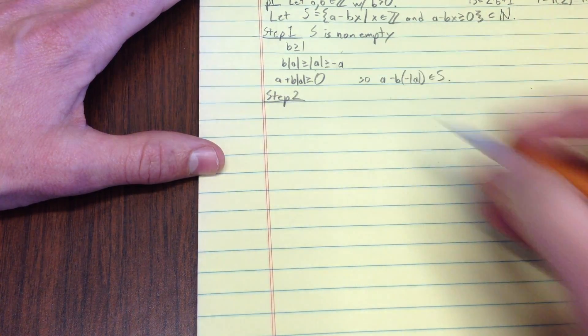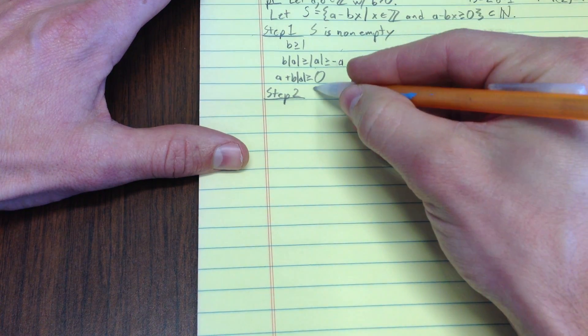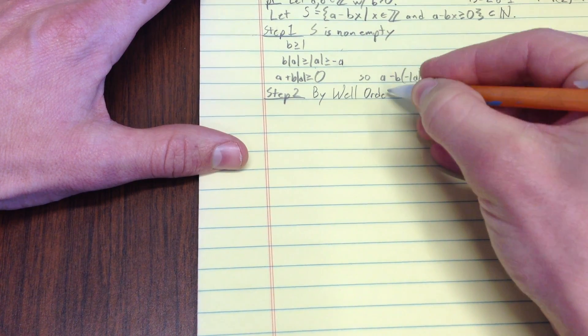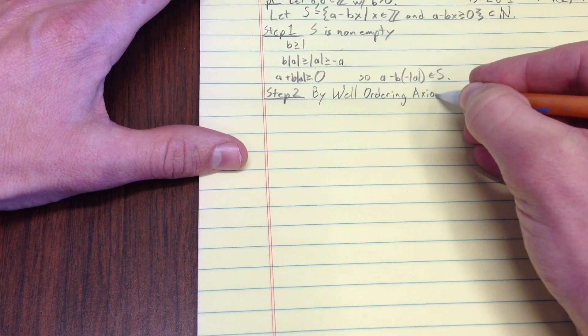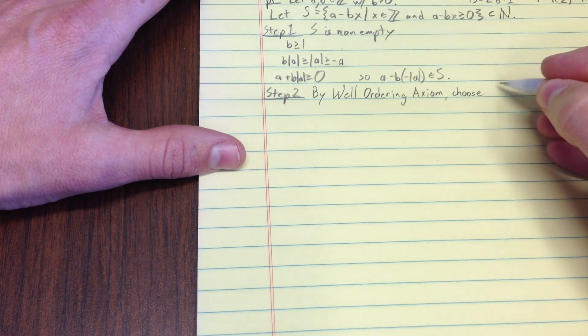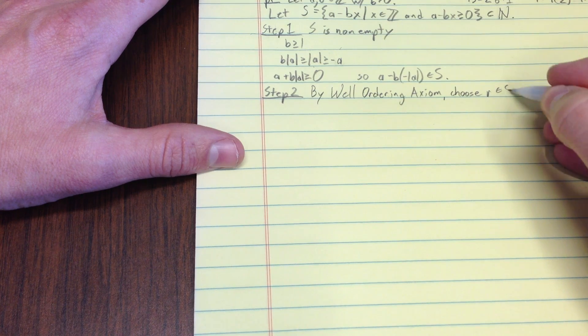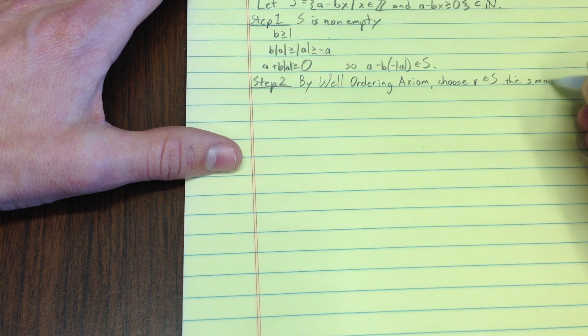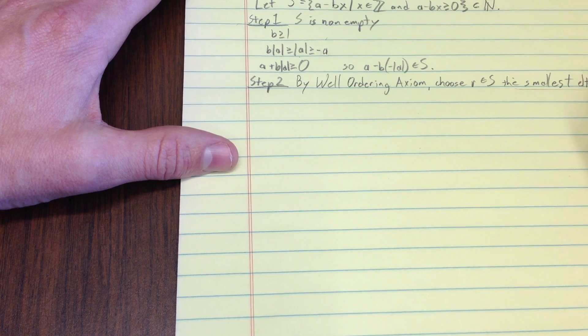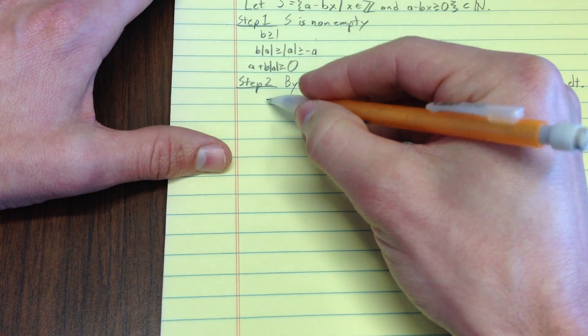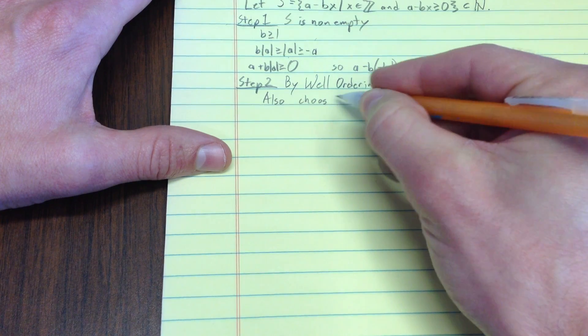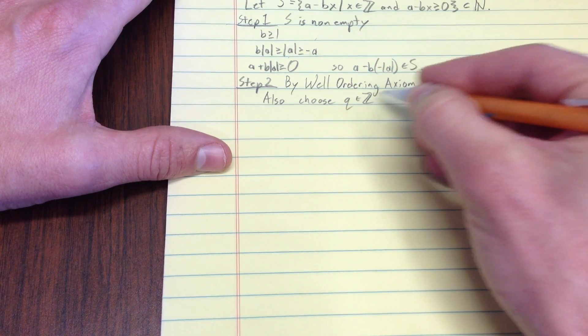So, step two. Step two by the well-ordering principle or the well-ordering axiom. Choose r in s, the smallest element. And we're going to sort of push against this condition over time. So, the smallest element. Also, choose q in z such that, well.